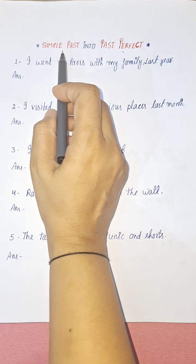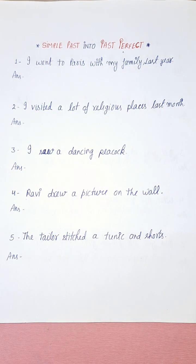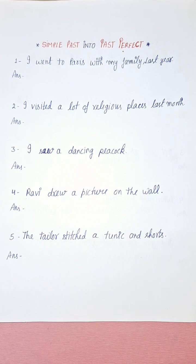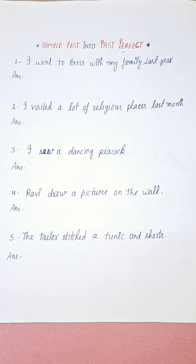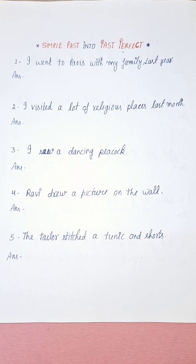Let's start with simple past tense first. What is simple past tense actually? It is a tense which expresses a habit or regular action in the past. For example, grandmother went swimming every summer. It also expresses an action that started and ended in the past. For example, Anna played with her pet dog last evening.